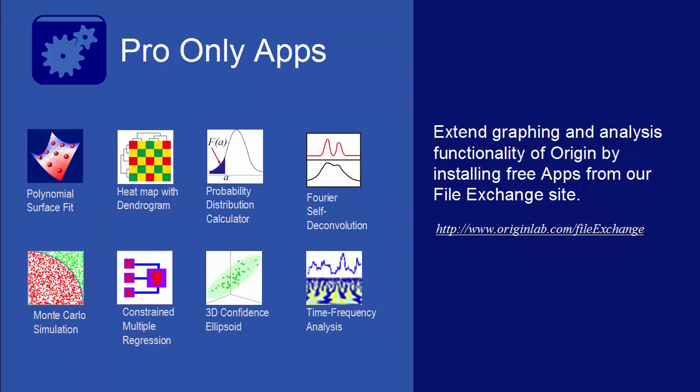One key new feature in 2016 is the introduction of apps in Origin, allowing the user to extend their graphing and analysis capabilities. Several apps are also available exclusively for Origin Pro, including polynomial surface fit, heat map with dendrogram, probability distribution calculator, Fourier self-deconvolution, a Monte Carlo simulator, constrained multiple regression, 3D confidence ellipsoids, and time frequency analysis.